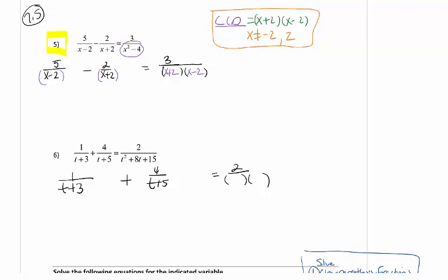So I'm now going to multiply every term by that LCD. I'm not going to do this in my head. I'm going to write down the LCD for every single term, so I can see what cancels and what's left over. The x minus 2's cancel for the first rational expression, and I'm left with 5 times x plus 2. For the second rational expression, the x plus 2's cancel and left with a minus 2 times x minus 2. And for the right hand side of the equation, both x plus 2 and x minus 2's cancel and left with a 3.